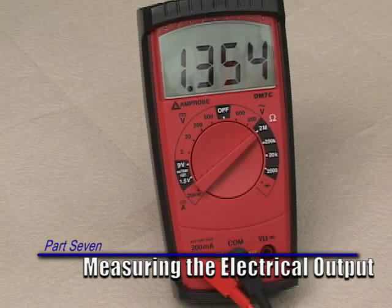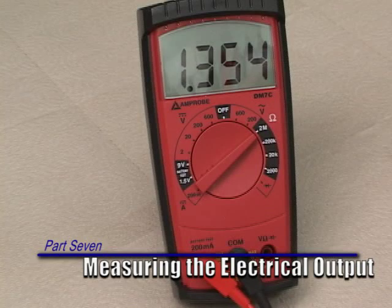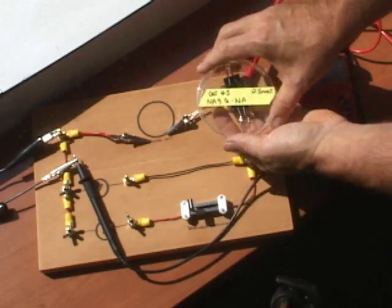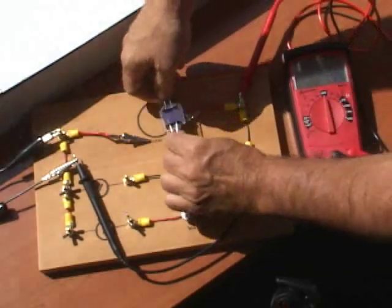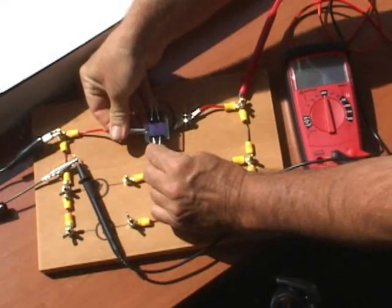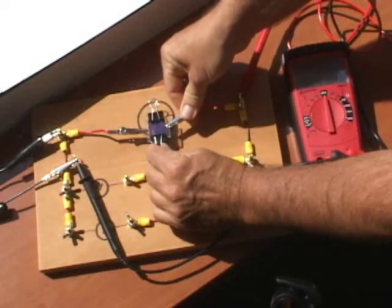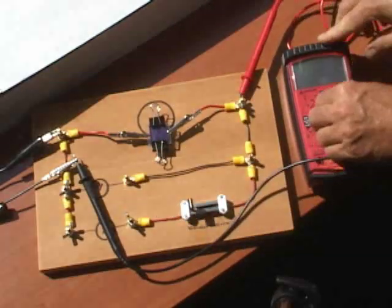Part 7. Measuring the Electrical Output. Step 1. The completed solar cell can be taken outside and measured under sunlight. The cell will last longer if it is protected from the elements by a polycarbonate plastic cover like a plastic petri dish.